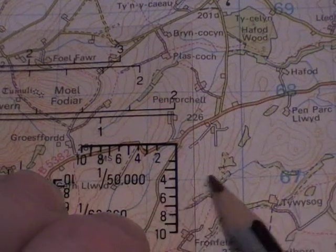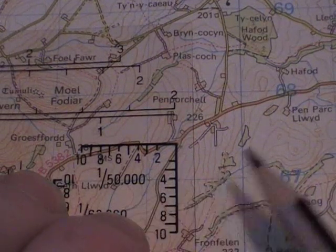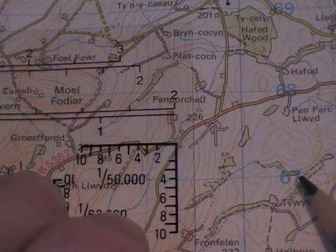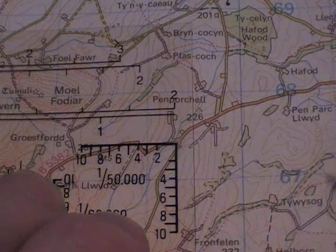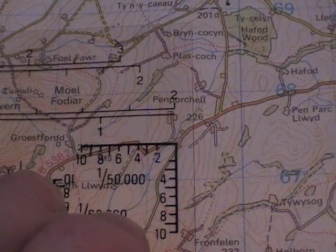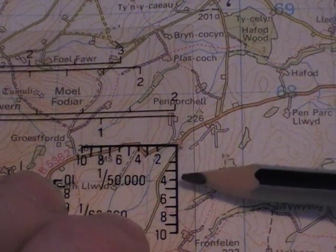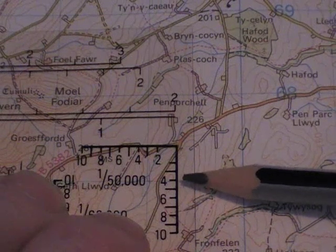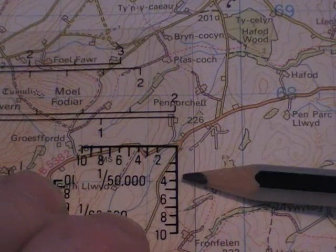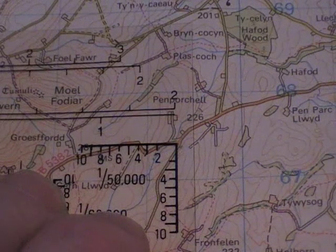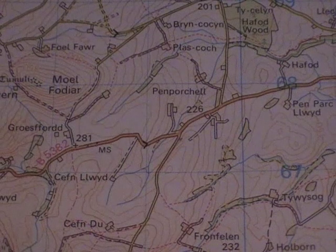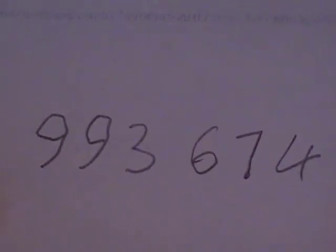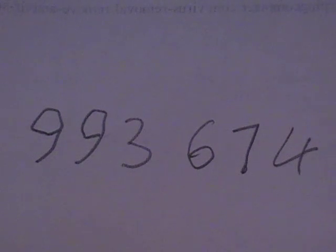On this line you can see it's number 67, so on your paper after the 993 you write 67. Then on the roamer that line is on number four, so you write four after the 67. And that is it — that's the grid reference for that junction, which is 993 674.